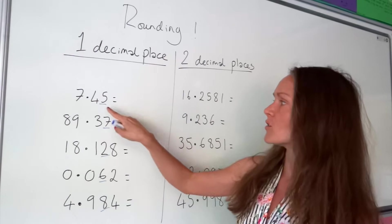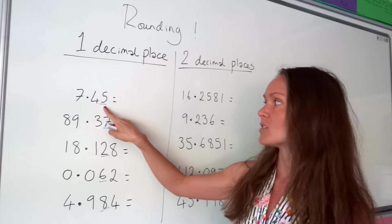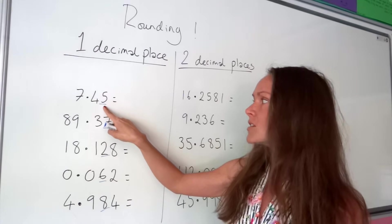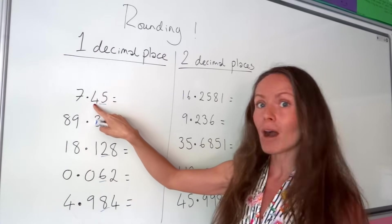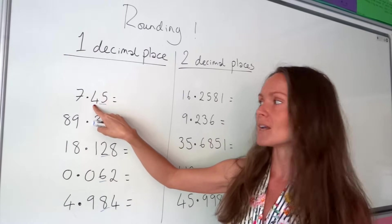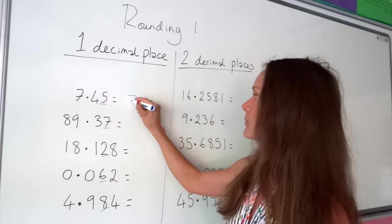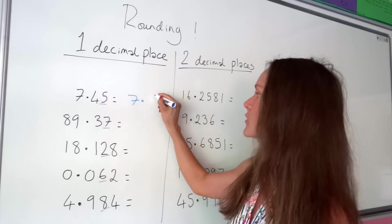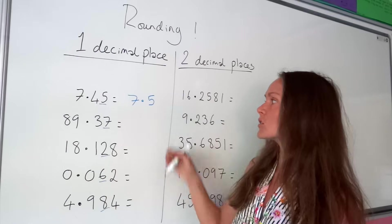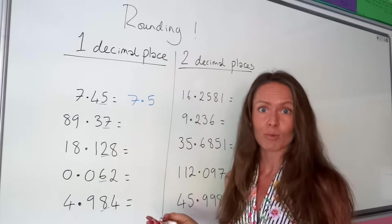So in the first one, I can see that the second number after the decimal point is the number five, so it means it rounds this number up one — so it changes to a five. So we're left with 7.5. That's one decimal place because we've only got one number after the decimal place.